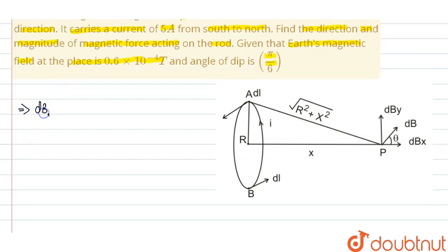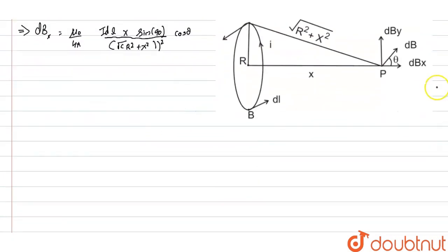dBₓ, the X component, is given by μ₀/(4π) times I dL sin(90°) divided by √(R² + X²), times cos θ. Here, capital X is the distance between R and P.